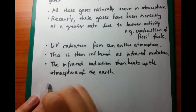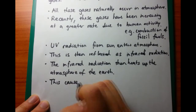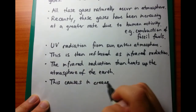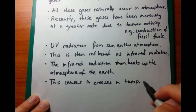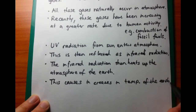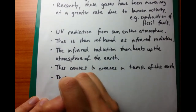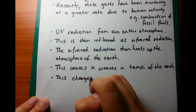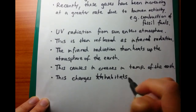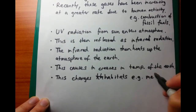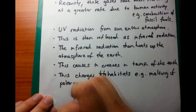The final thing is that as a result of these increasing temperatures, we have changes in habitats. Colder places get warmer, and warmer places get even hotter. You can give an example of that — in my particular example, I've said it's the melting of the polar ice caps, which is one of the most obvious changes.